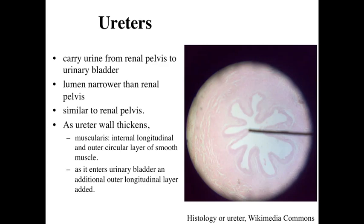The ureter is going to be a structure still lined by a transitional epithelia — a stratified epithelia — which is going to carry the urine without modifying it, without exposing underlying tissues to it, into the urinary bladder. It's going to look very similar to our renal pelvis, but if we take a look at the wall, we're going to be surrounded by a muscularis. Different from the digestive system, we're going to have an inner longitudinal layer of smooth muscle and an outer circular layer of smooth muscle. In the digestive system, we have an inner circular and outer longitudinal; in the urinary system, we've got an inner longitudinal and an outer circular layer of smooth muscle.